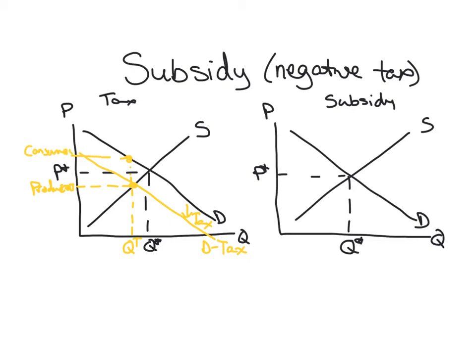And so the higher price to consumers is going to reduce quantity demanded, while the lower price for producers is going to reduce the quantity supplied. So both quantity demanded and quantity supplied fall down to QT. And the gap between the two prices, the consumer and producer price, that's the amount of the tax. So let's say that's like a $5 tax.